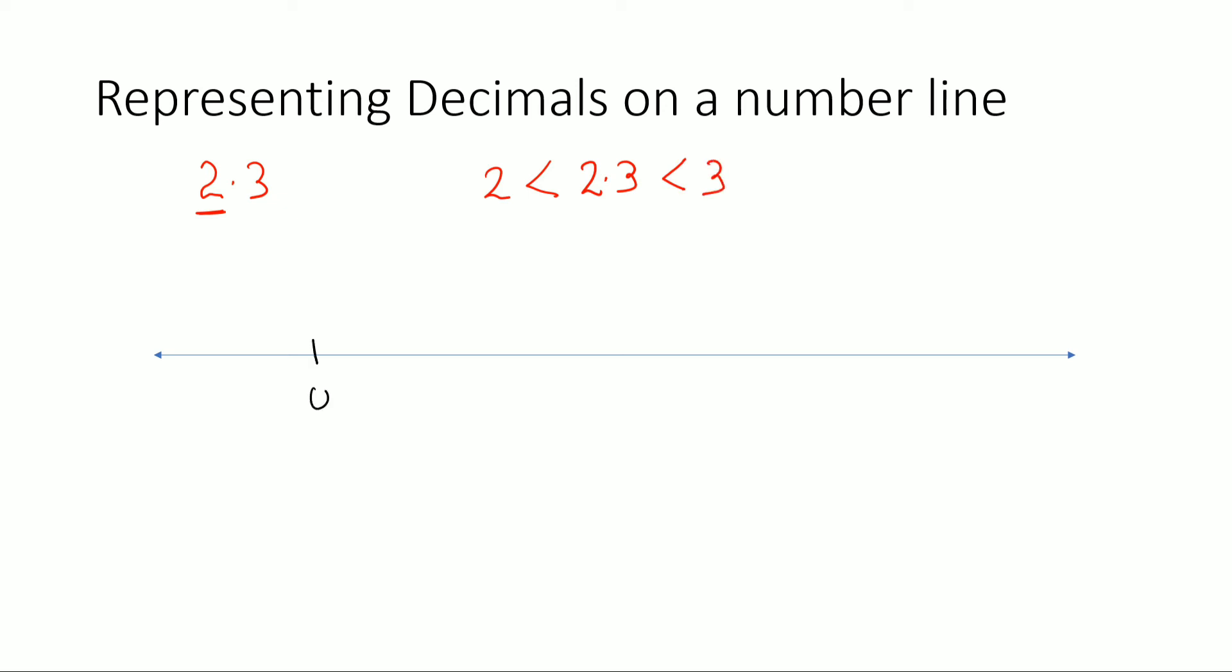So what we can do is, let's say this is a number line: 0, 1, 2, and 3. It should be all equal, divided equally. And between 2 and 3 we need to make 10 parts: 1, 2, 3, 4, 5, 6, 7, 8, 9, 10. So this first part here is 2.1, 2.2, and this point here is 2.3.